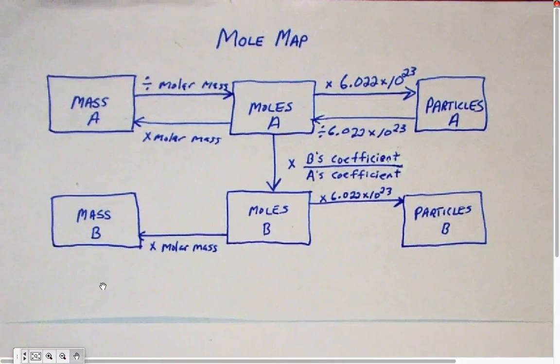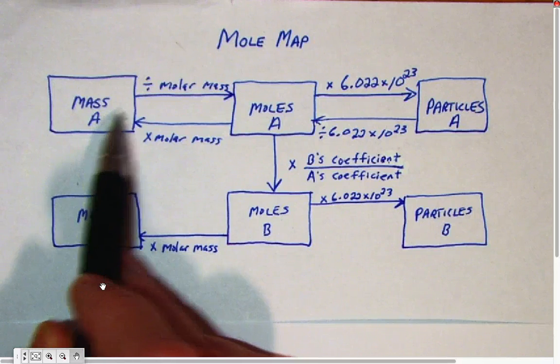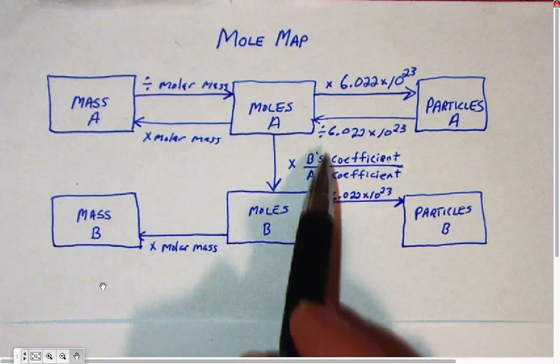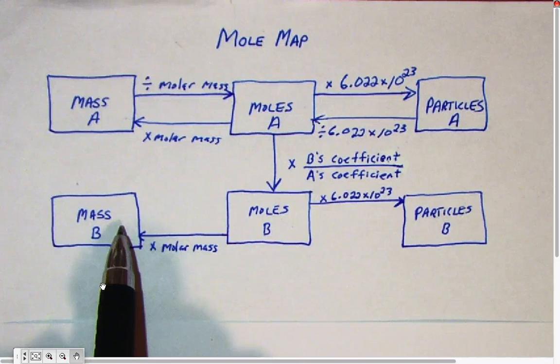You can follow the steps in the mole map up here. You would start with that original chemical, divide by the molar mass to get the moles, multiply by B's coefficient over A's to get moles of B, and then multiply by molar mass to get the mass of B.